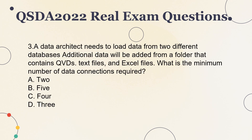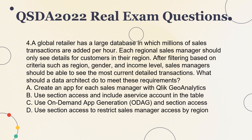Question 3. A data architect needs to load data from two different databases. Additional data will be added from a folder that contains QVDs, text files, and Excel files. What is the minimum number of data connections required? A. 2. B. 5. C. 4. D. 3.